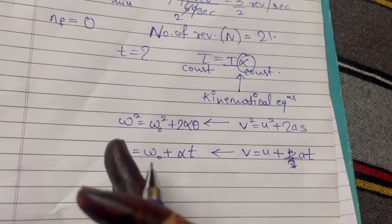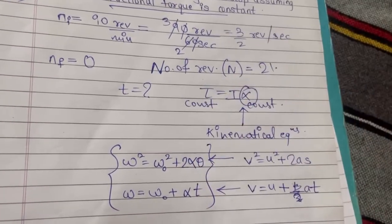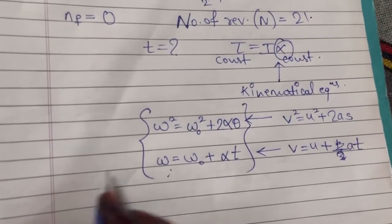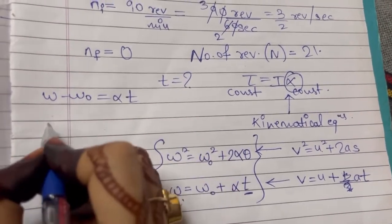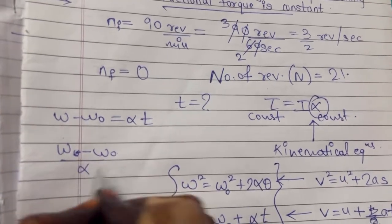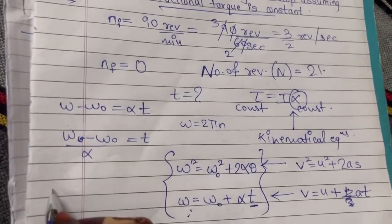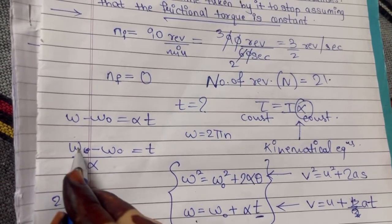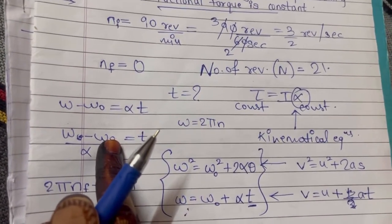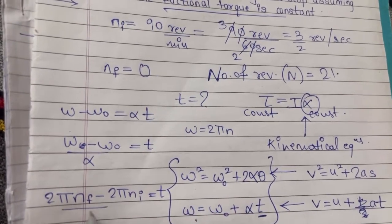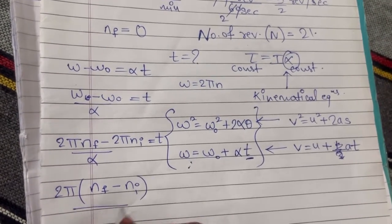Since we are in rotational motion, we use these equations. First we use ω = ω₀ + αt because it contains time. Rearranging: t = (ω − ω₀) / α. Since ω = 2πn, we substitute: t = (2πn_f − 2πn_i) / α. Taking 2π as common: t = 2π(n_f − n_i) / α. This is Equation 1.